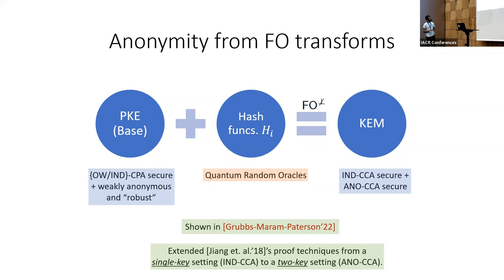Towards this result, at a high level we extended Jiang et al.'s proof techniques from a single key-pair setting in the context of IND-CCA security to a two key-pair setting in the context of anonymity. Recall that in the IND-CCA security game the challenger samples a single key pair, but in the anonymity setting the challenger generates two key pairs. This change looks small, but in the context of performing security analysis in this two key-pair setting, it creates some additional technical headaches.